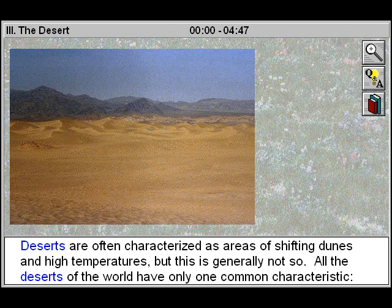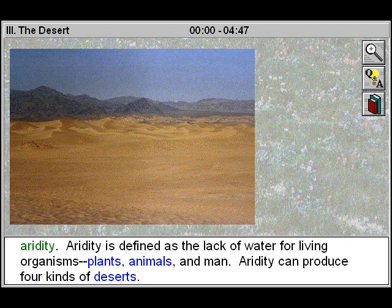Deserts are often characterized as areas of shifting dunes and high temperatures, but this is generally not so. All the deserts of the world have only one common characteristic: aridity. Aridity is defined as the lack of water for living organisms — plants, animals, and man.